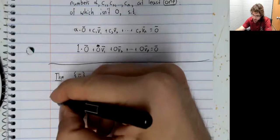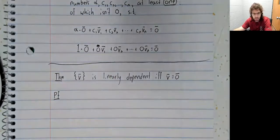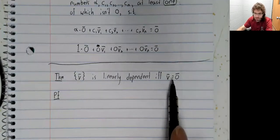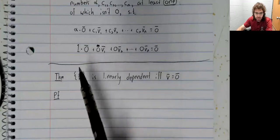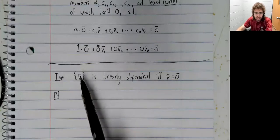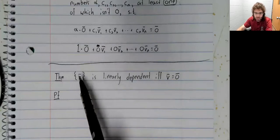And let's prove this as well. We've already gone in one direction. If this vector is the zero vector, then the set containing it is linearly dependent.